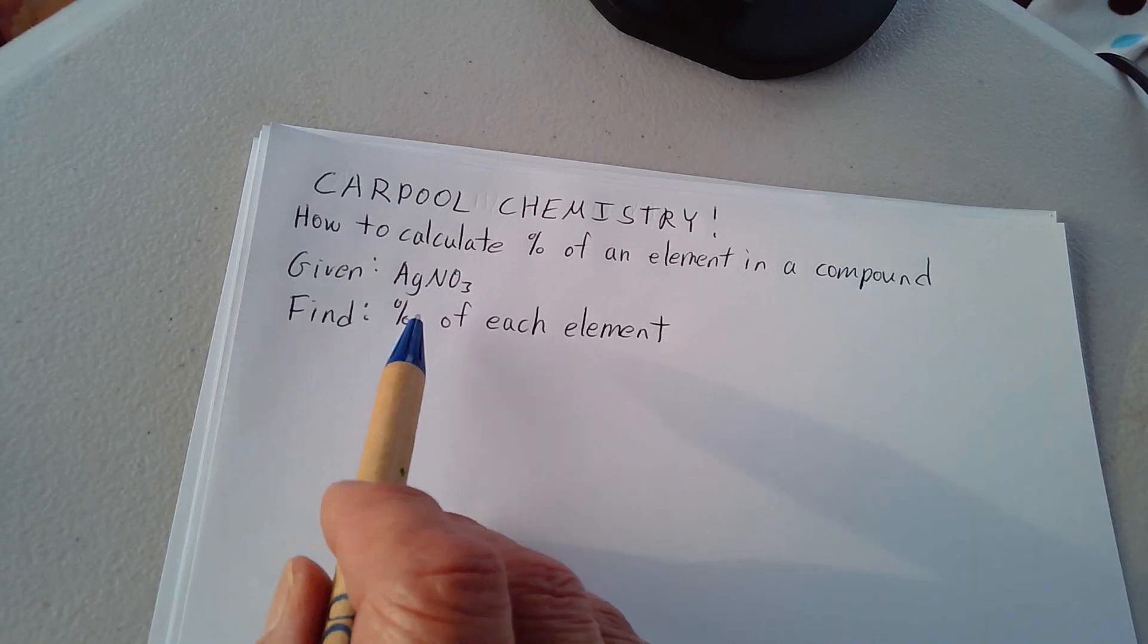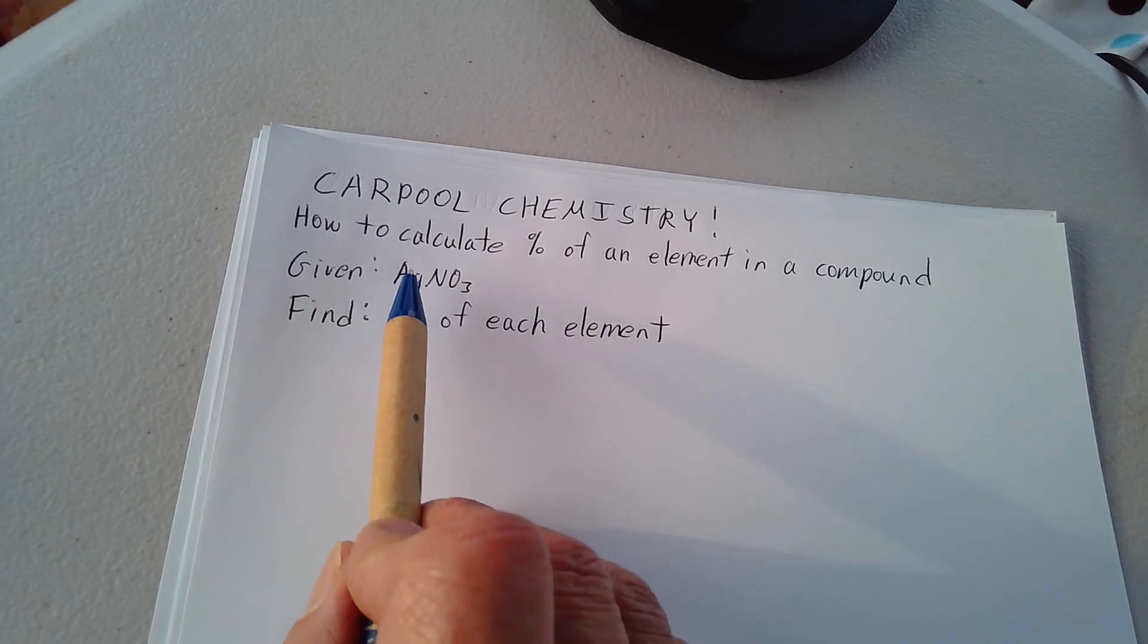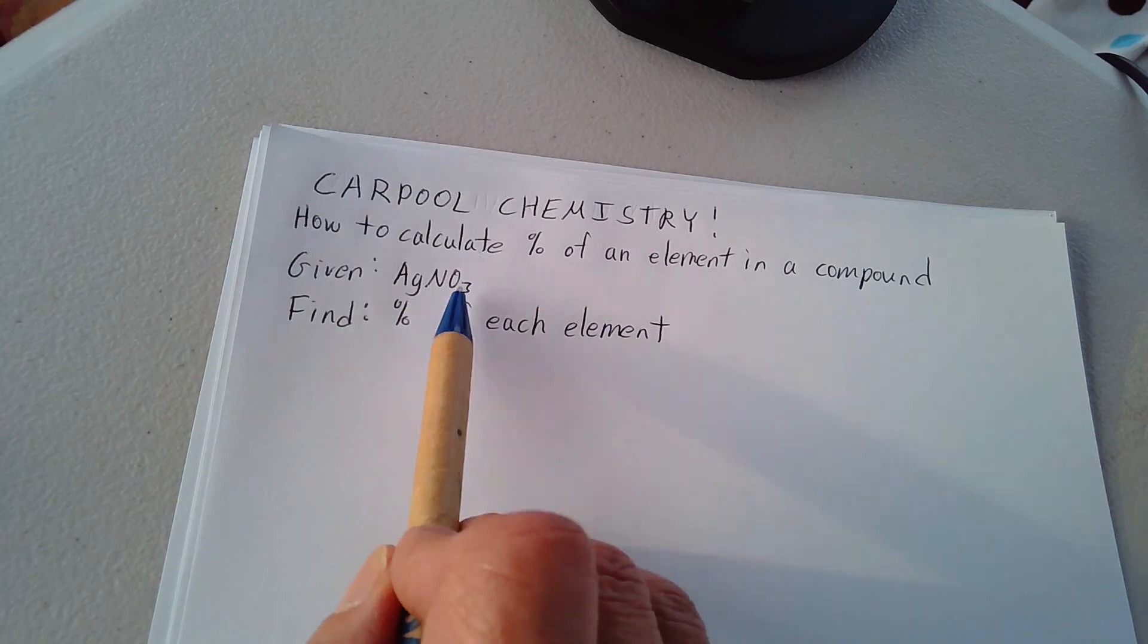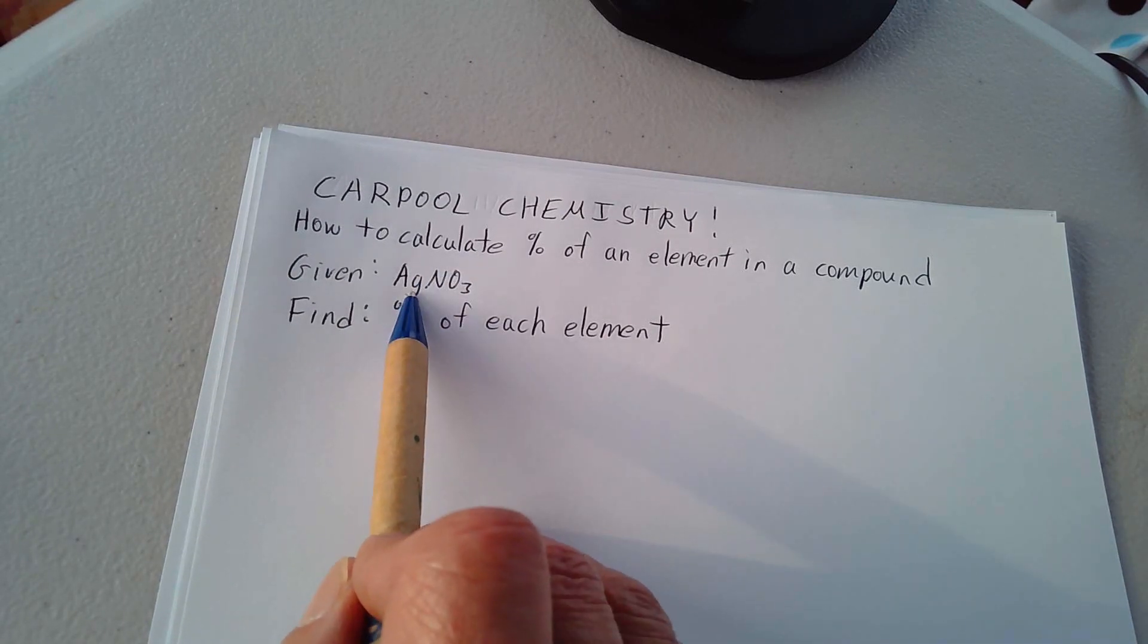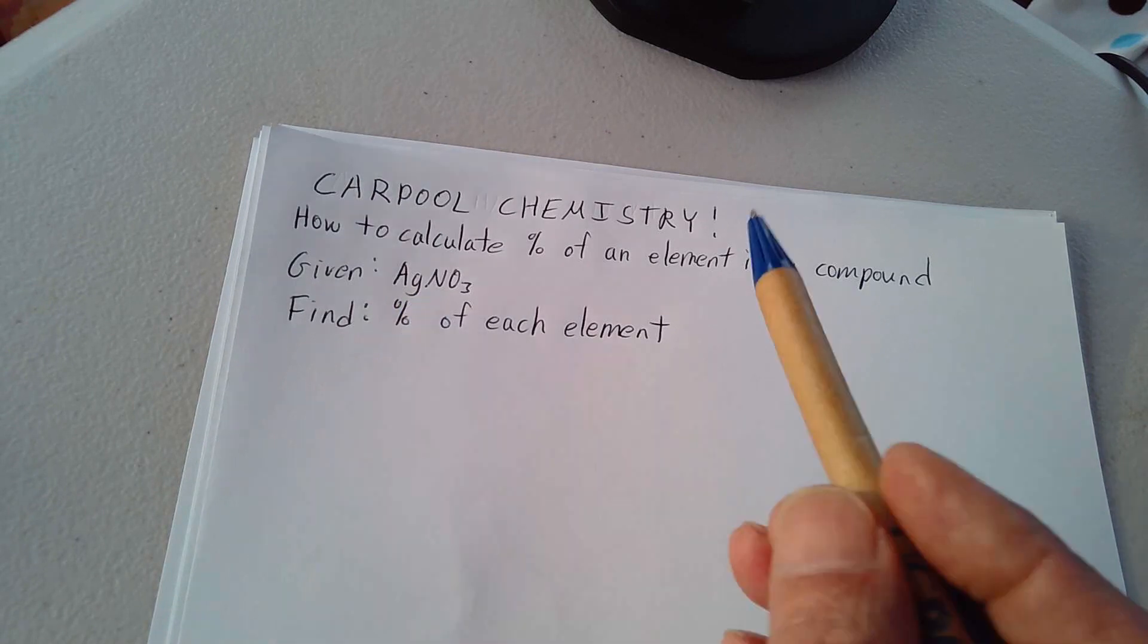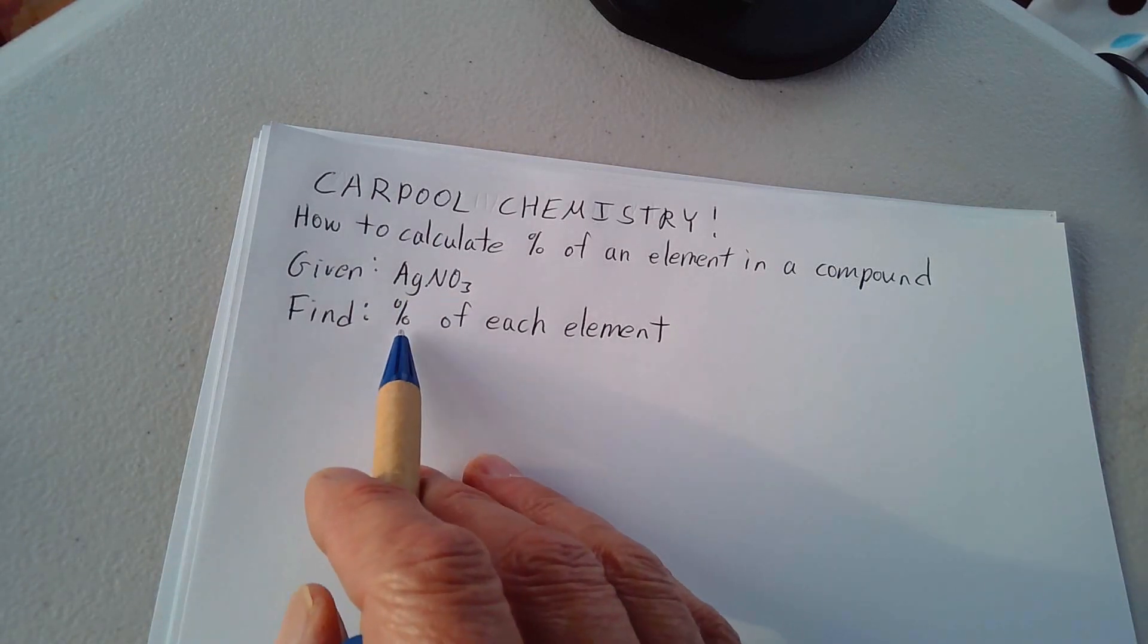Now the untrained chemist would say, oh, that's easy. There's one silver, there's one nitrogen, there's three oxygens. That's a total of five atoms. One out of those five atoms is silver, so they might say, well, that's 20%. Doesn't work that way.